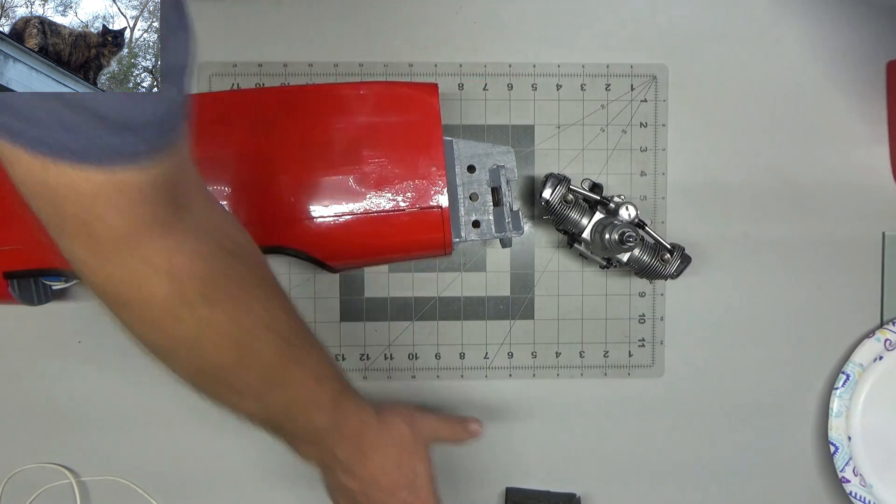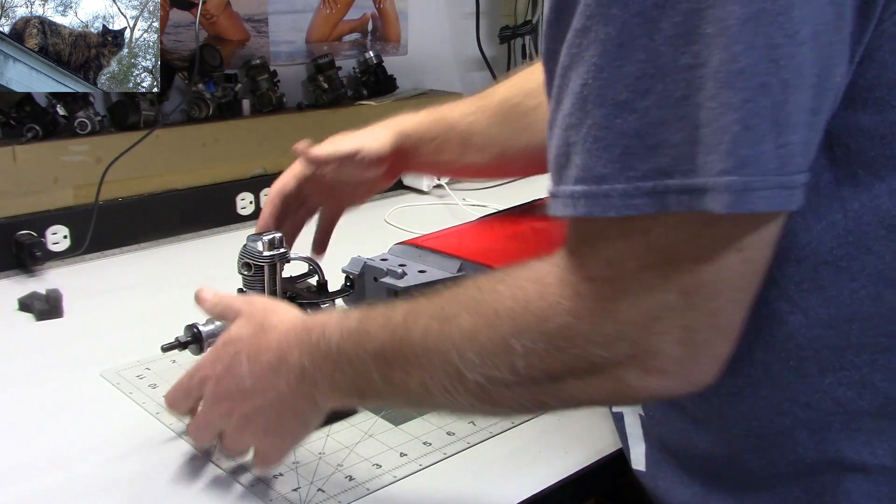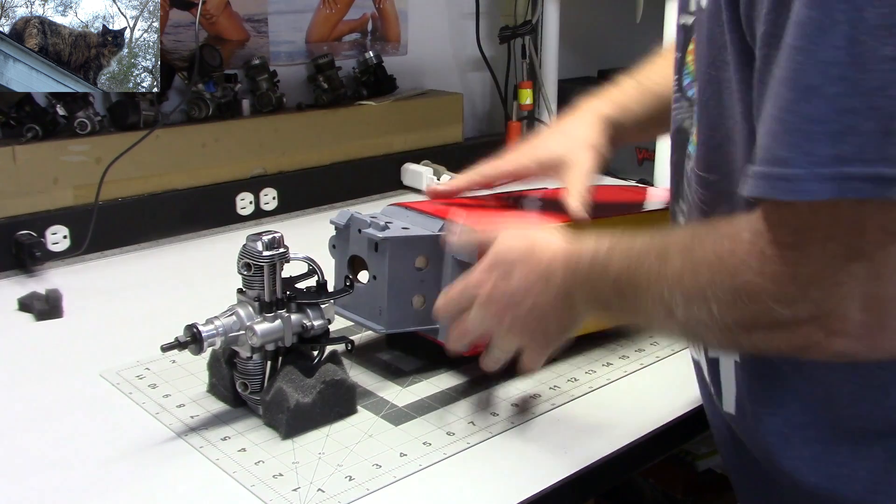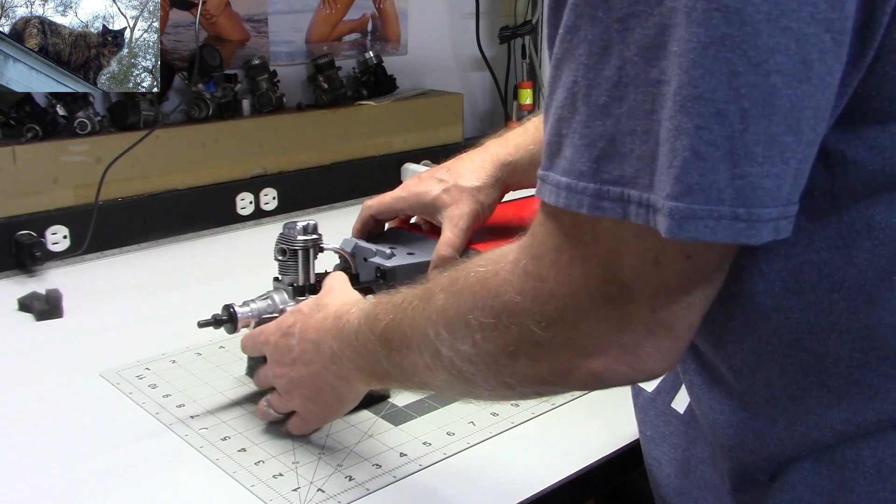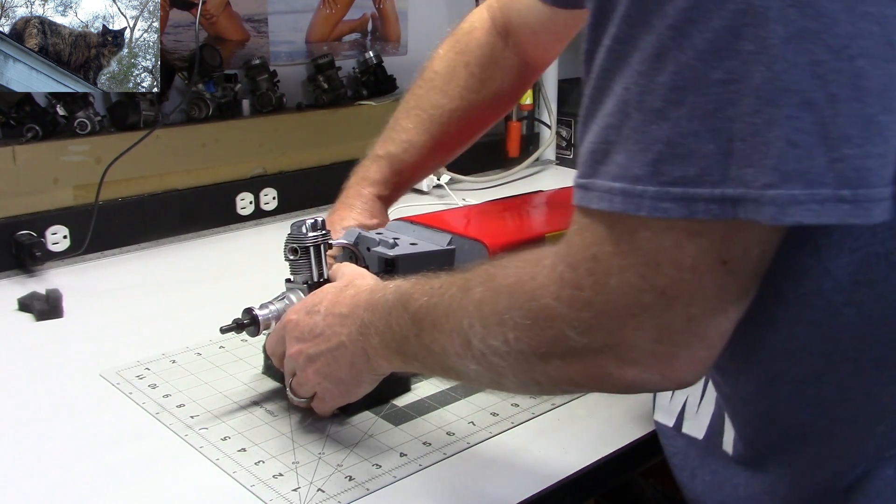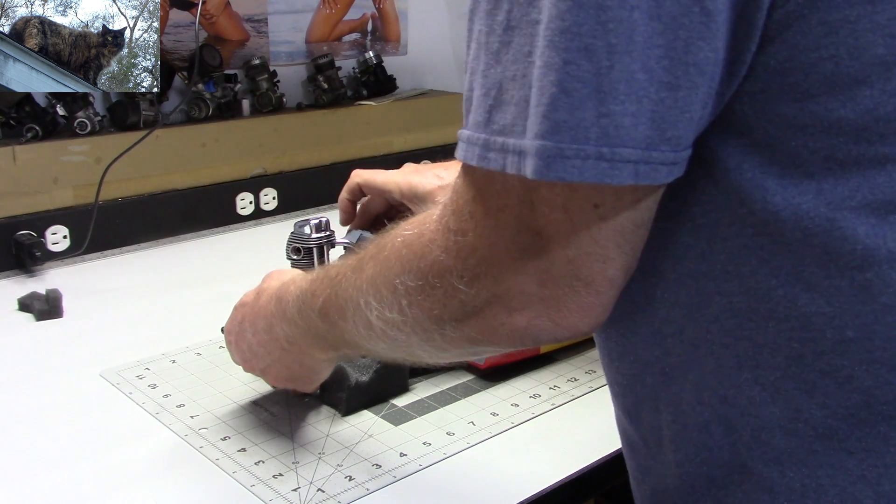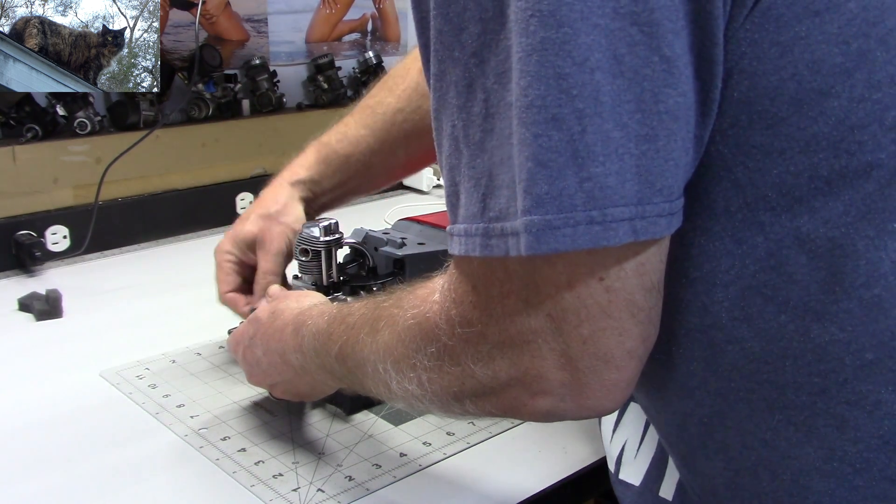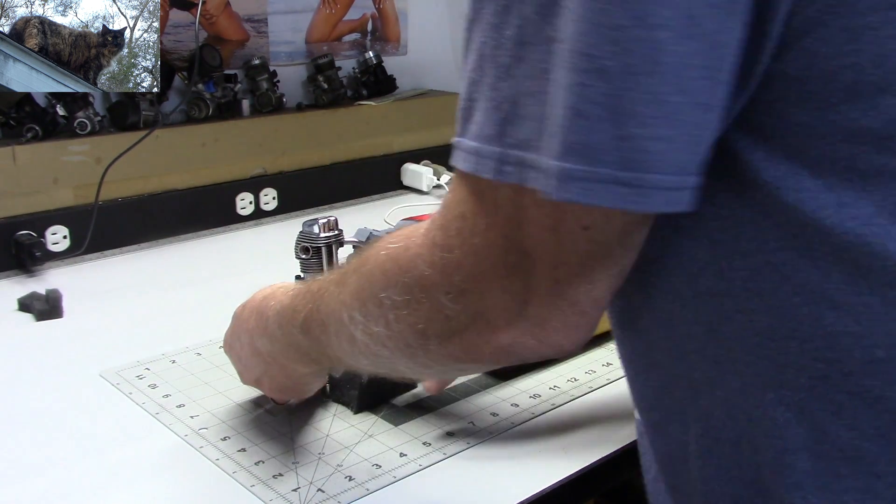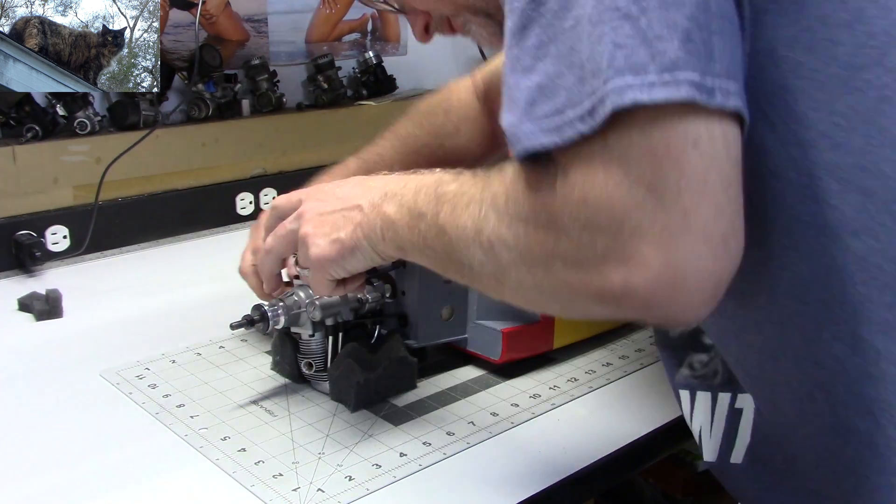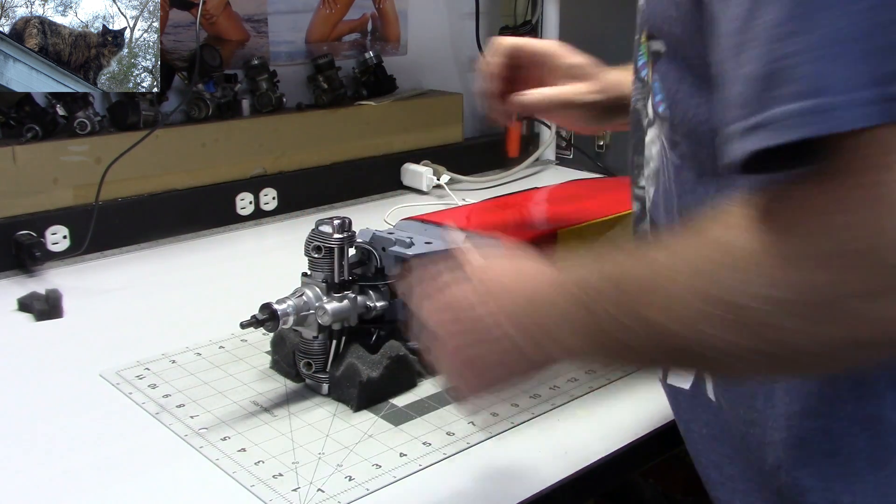So what I've done here just prior to turning the camera on is I got some foam pieces here so that I can kind of set this engine up like this and maybe kind of slide this in place like it would be mounted. But I think I need to put a little bit of support under there, so I'm just going to mock this up a little bit. Okay, so there we go.